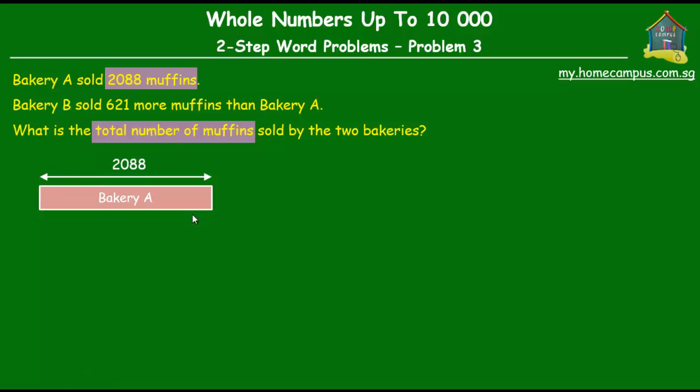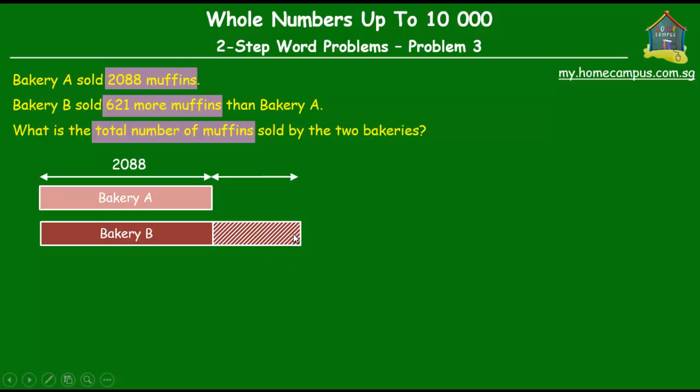Now what do we know about the number of muffins that Bakery B sold? Well, we know that Bakery B sold 621 more muffins than Bakery A. So it sold as much muffins as Bakery A did and 621 more. So this shaded unit over here is equal to 621 muffins.